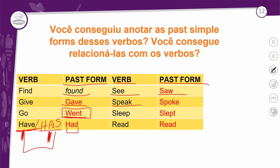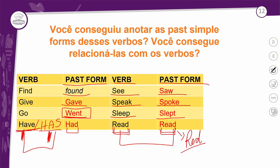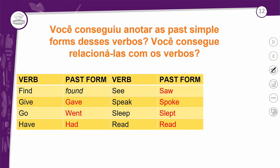E temos o verbo 'read' — ele é engraçadinho porque se escreve da mesma forma no presente e no passado, mas a pronúncia muda: 'read' no presente e 'read' no passado — que lembra a palavra 'red' (vermelho). Só muda a pronúncia. No passado ele assume a mesma forma escrita. O particípio passado a gente não vai ver no primeiro ano.